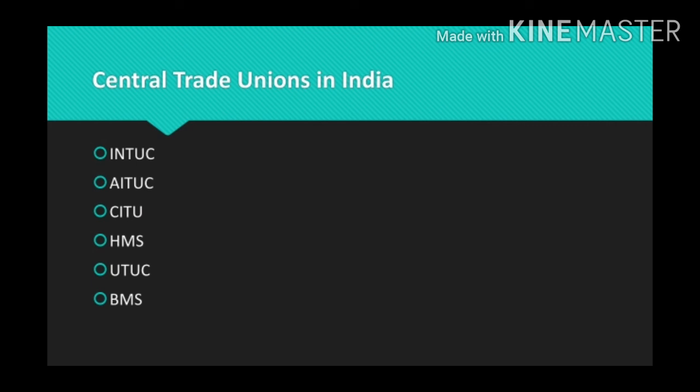Other central trade unions include TUCC — Trade Union Coordination Centre — and NFITU — National Federation of Indian Trade Unions. There are also important sector-based federations such as All India Bank Employees Association, National Federation of Indian Railwaymen, All India Port and Dock Workers Federation, National Federation of Post and Telegram Workers, and Indian Federation of Working Journalists.